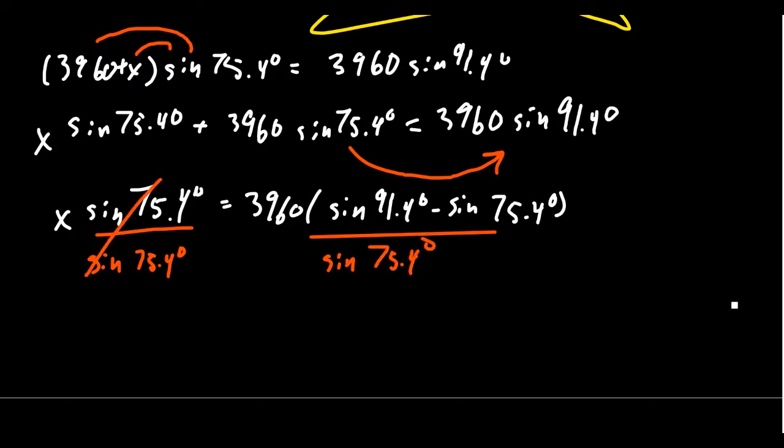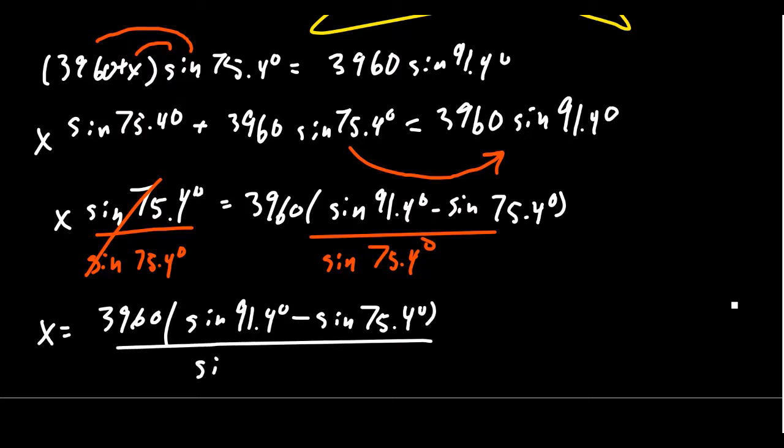Although there might be temptation there, just because we have a sine minus a sine doesn't mean we can combine them together. That's not how angle differences work with sine. We can't just subtract the angles. Just leave it alone. And then to finish off, we need to solve for X. This is perfectly good.